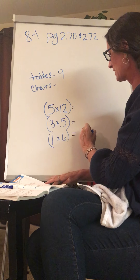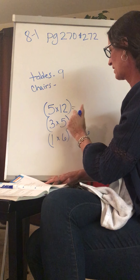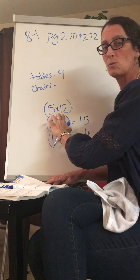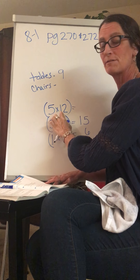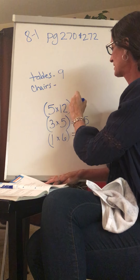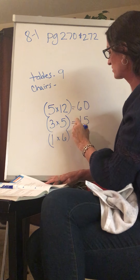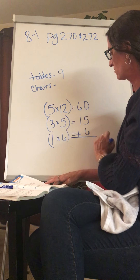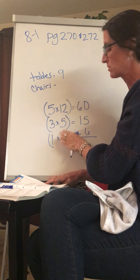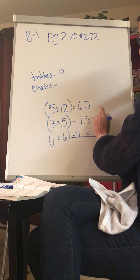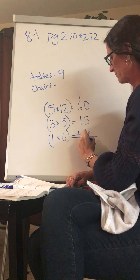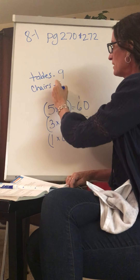I'm going to figure out how much all of those equal and then add them together to find out how many chairs there are. So 1 times 6 is 6, 3 times 5 is 15, and 5 times 12 — well, 5 times 10 is 50 and 5 times 2 is 10, so 50 and 10 is 60. You can also just know that from your math facts. Then I add those together, because all the chairs from these tables and all the chairs from these tables and all the chairs from these tables. So if I add 5 and 6, I have 11, and then 71, 81 — so there are 81 chairs.